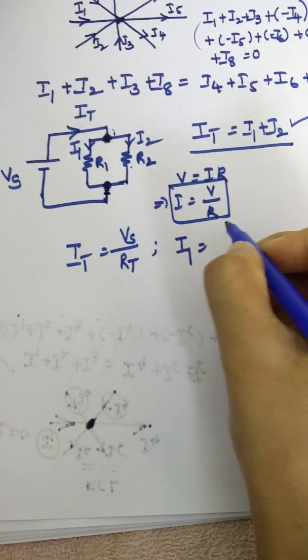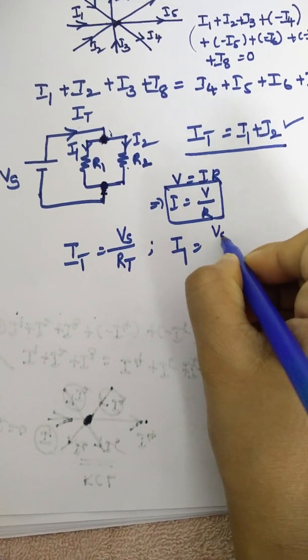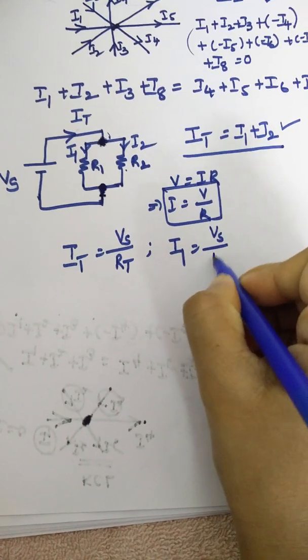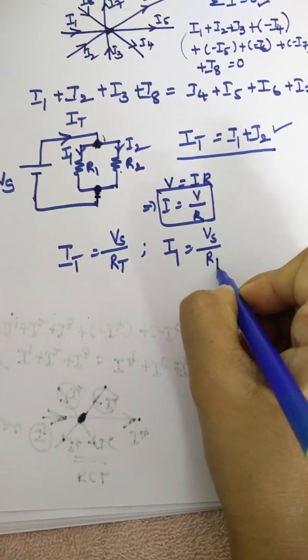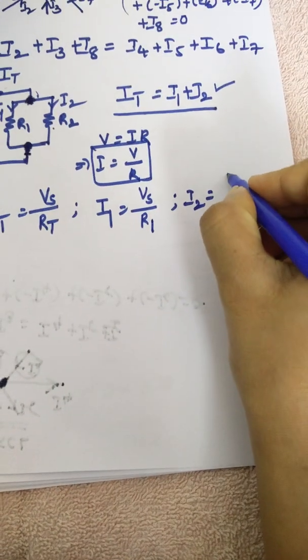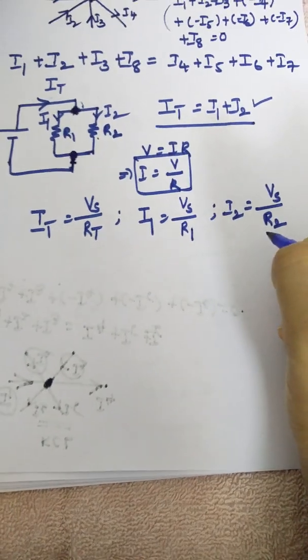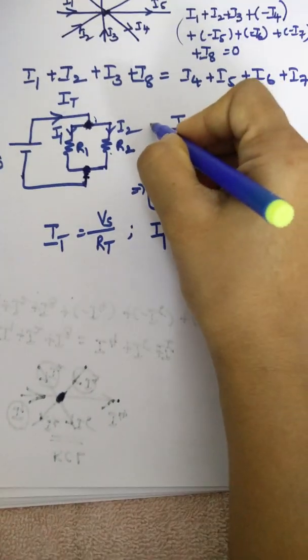So what is I1? V by R is the formula. What is the voltage? Vs is the voltage by resistance is what in the first branch? R1. Similarly, I2. What is I2? Voltage is Vs and resistance is R2 in the second branch.